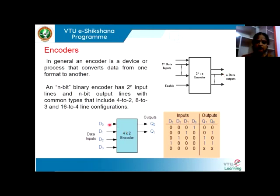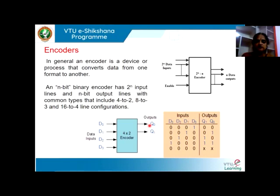If we have 4 inputs, then we need to have 2 outputs. If you have 8 inputs, the number of outputs expected at the output of the encoder is 3. The functioning of the encoder is just opposite to that of a decoder.